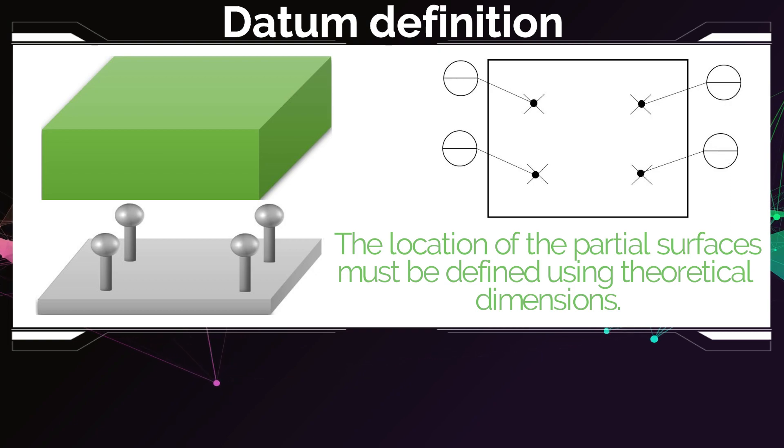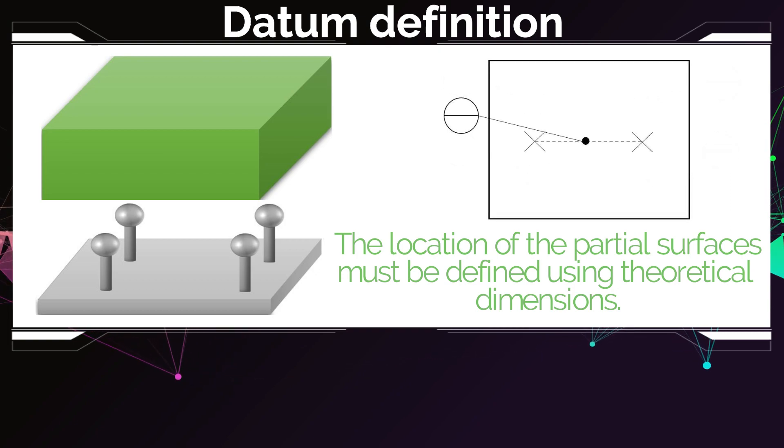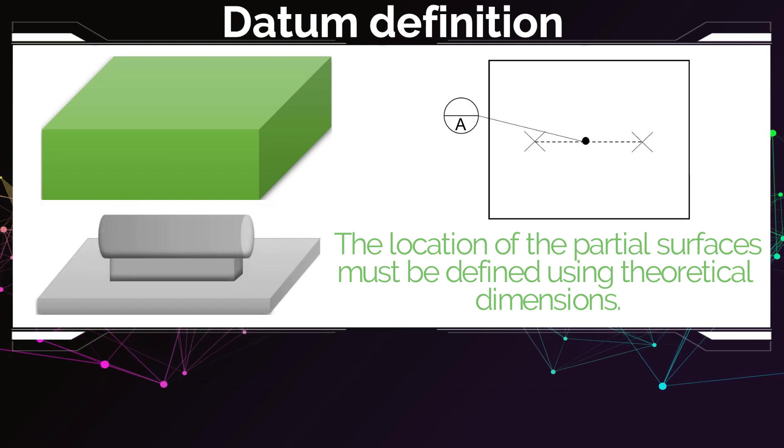You can also specify a line, so you can create two points and between them create this dotted line and then point at it and say that this is my datum A. And in the measurement you're going to have to use then cylinder, and when your part is resting on it, it will have contact only with one line.